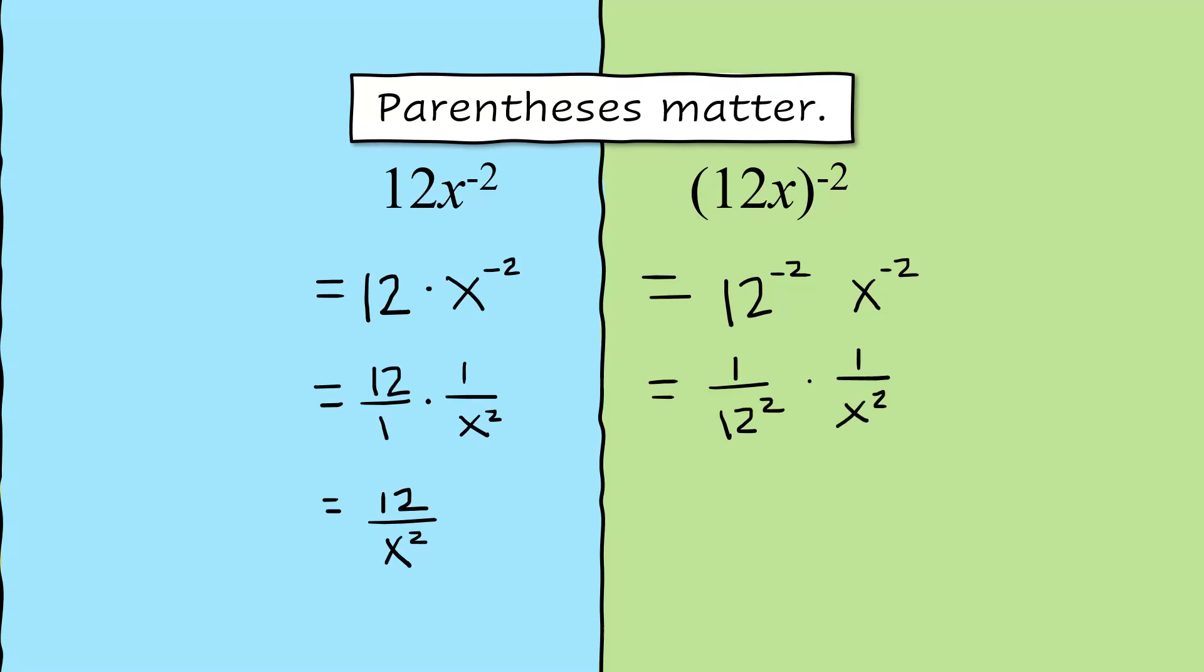And when you multiply straight across, 1 times 1 is 1. 12 squared is 144. So the answer is 1 over 144 x squared.